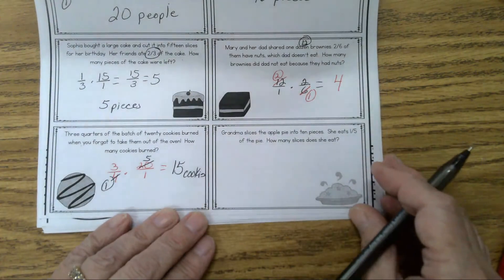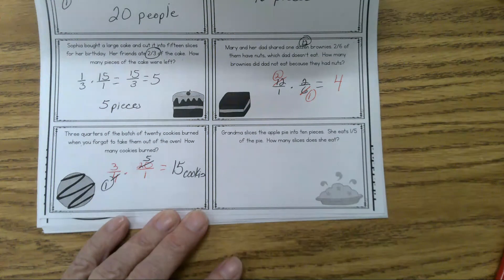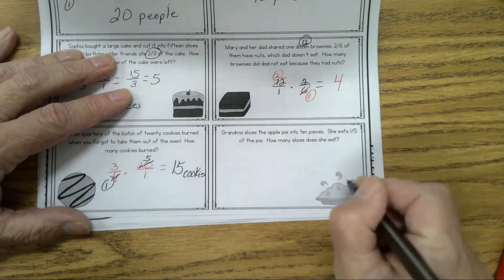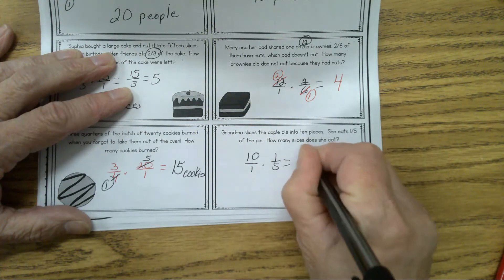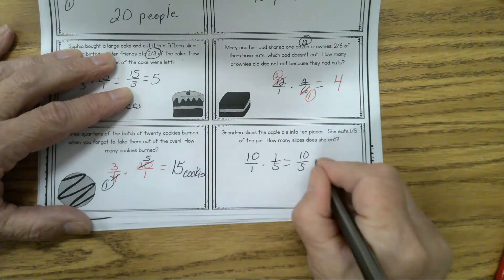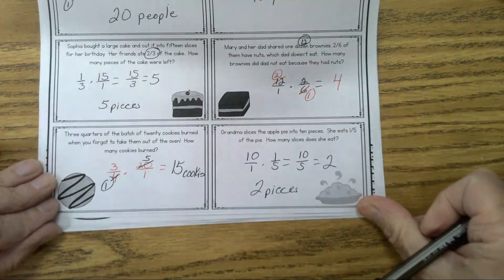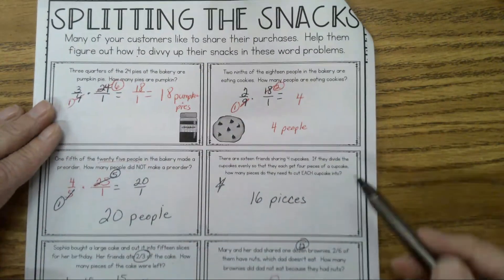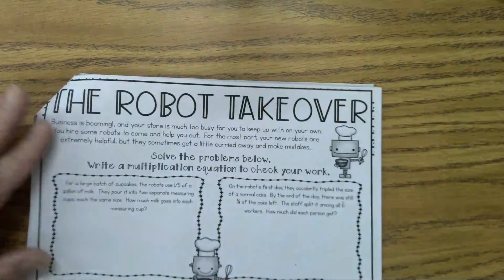Let's do the next one about Grandma and her apple pie. Devon, tell me about Grandma's pie. Grandma slices the apple pie into 10 pieces. Each one-fifth of the pie. So we're going to have 1/5 times 10, right? The pie is cut into 10 pieces, so that's 10 over 1 times 1/5. That equals 10/5. I could have simplified before I multiplied, but I didn't. Two pieces. Does everyone have all eight of these answers? Great.